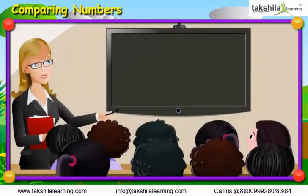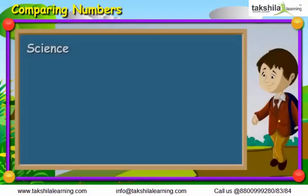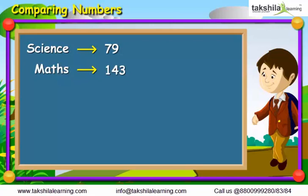Children, before moving any further, let us first understand this problem. Saurabh has scored 79 marks in Science and has scored 143 marks in Maths. Can you tell in which subject he has scored more marks? Let us discuss.